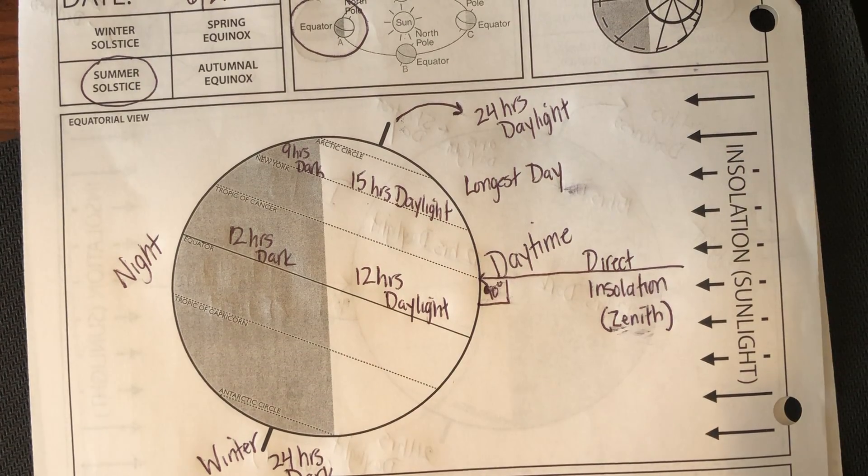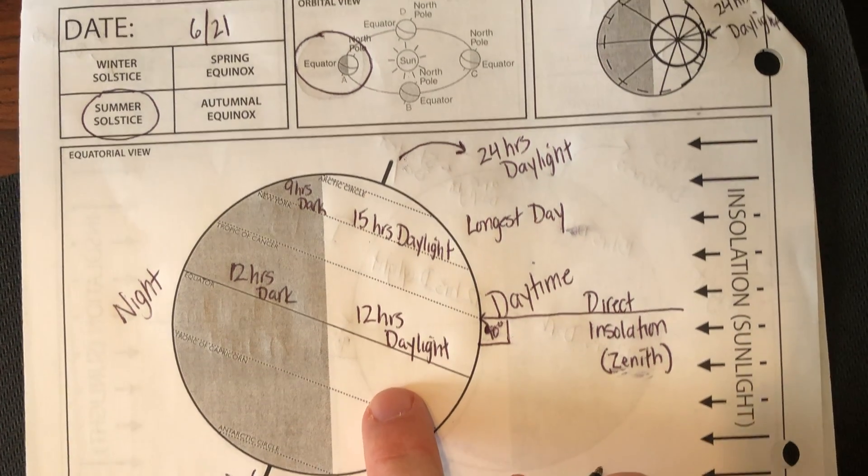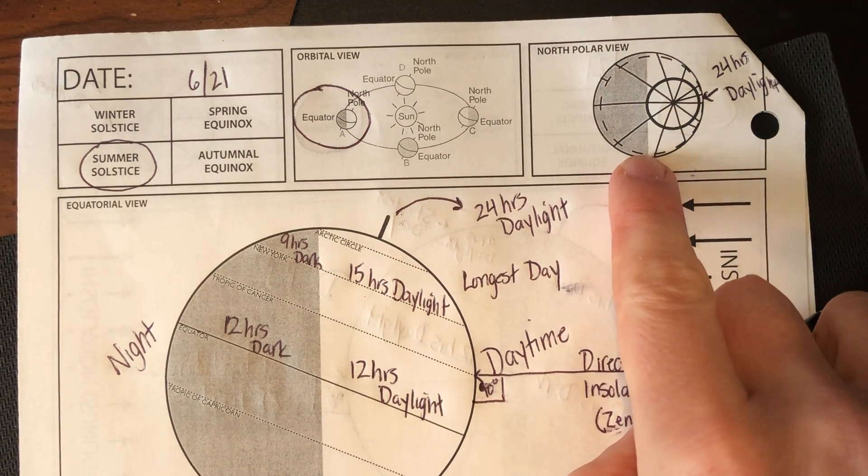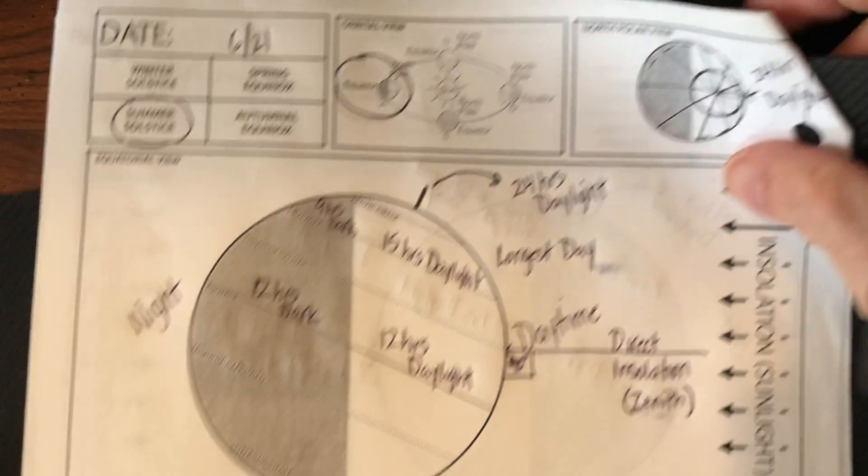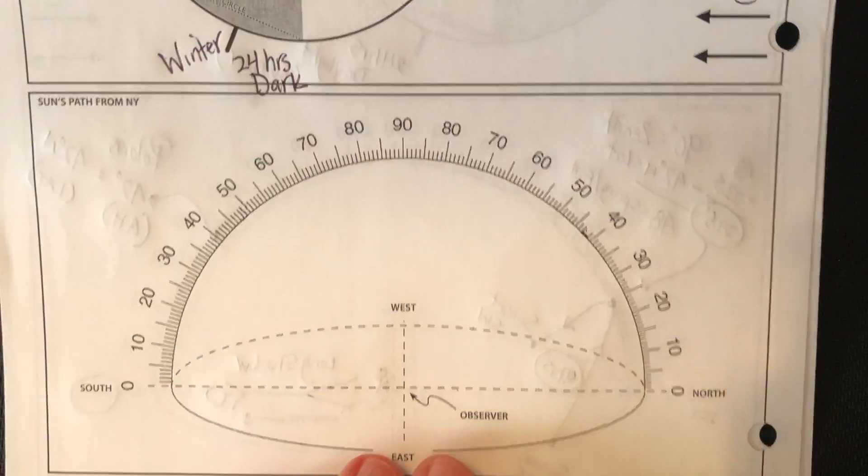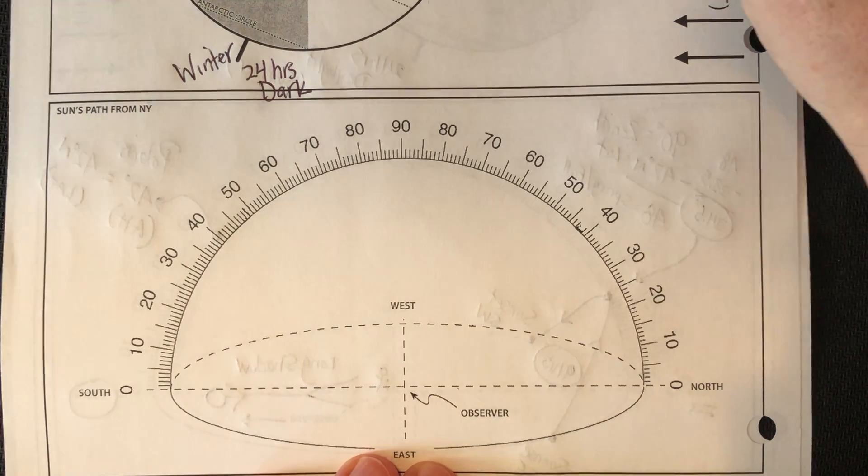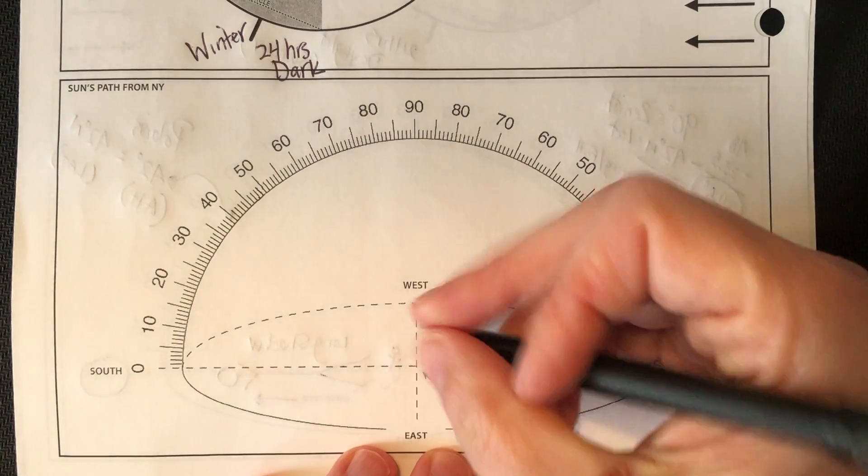You have your amount of daylight hours from the equatorial perspective. We have the orbital perspective and the North Pole perspective. What's going to be important here is to take a little bit of time to draw your sun's path. I did this for winter. Let's do this for summertime as well. I'm going to put my observer in again.